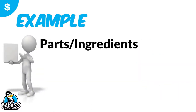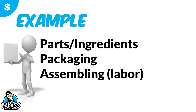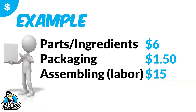For a product-based business, you'll have your parts and ingredients, your packaging, and the labor for assembling the product — not selling or merchandising it, just assembling it. For example: $6 in parts, $1.50 in packaging, and one hour of labor at $15 gives you a cost of goods of $21.50. If you're making multiple products in an hour — say five — you divide the labor cost by five. You need to adjust based on how many units you produce in that time.